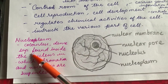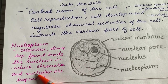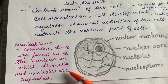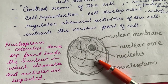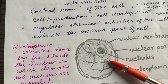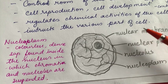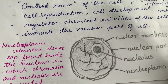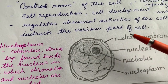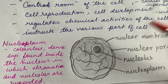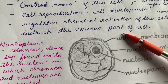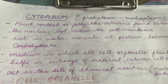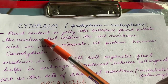The nucleoplasm is a colorless, dense sap found inside the nucleus in which chromatin and the nucleolus are suspended. The fluid present inside the nucleus is known as nucleoplasm. It was Purkinje who coined the term protoplasm — protoplasm is all the fluid present inside the cell membrane. Protoplasm is inclusive of the nucleoplasm as well as the cytoplasm.